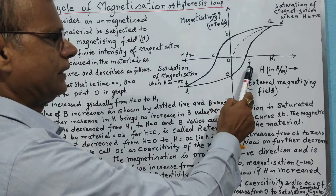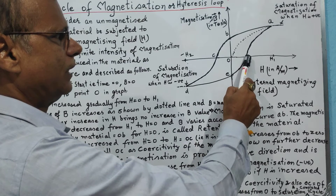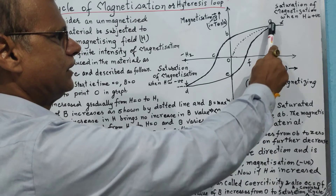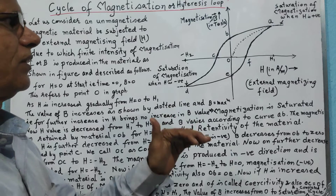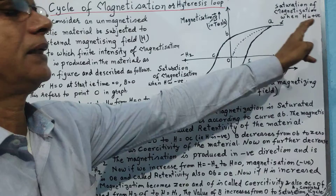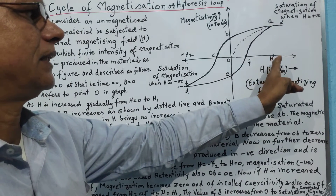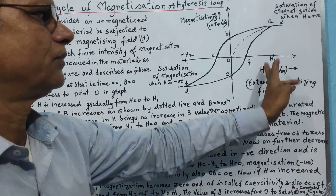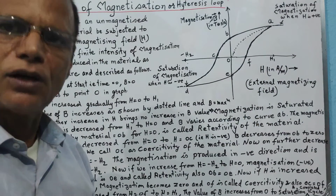If we further increase the value of H from OF to H1, the magnetization is saturated again at point A. Any further increase in H beyond H1 brings no change in the intensity of magnetization of the material, completing the full cycle.